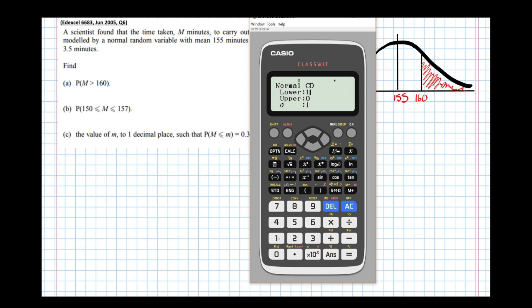So the lower bound of our region is 160. The upper bound is infinity. Now the calculator can't deal with the number infinity, so we're going to put the biggest number the calculator can deal with, 10 to the power of 99. That's the number we're going to use to simulate infinity. It's told us that the standard deviation is 3.5.